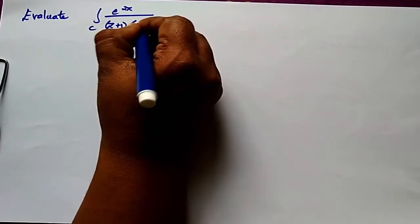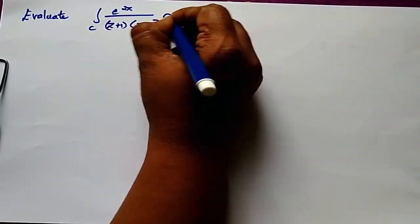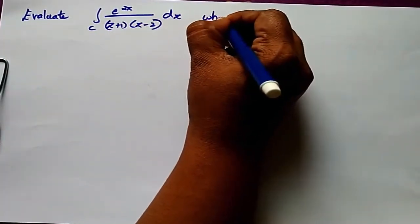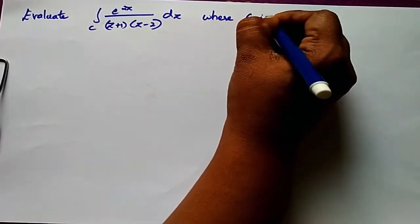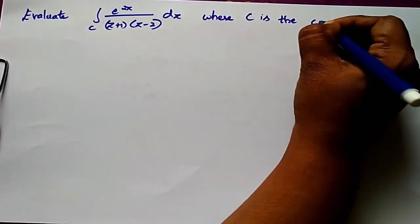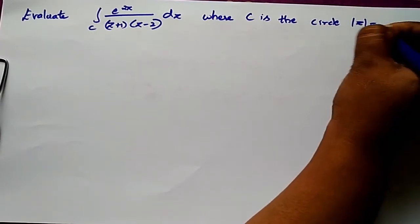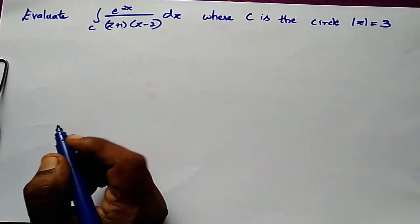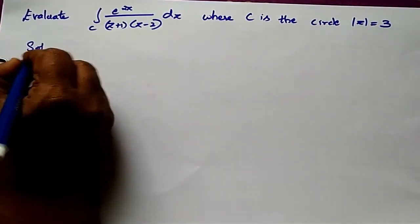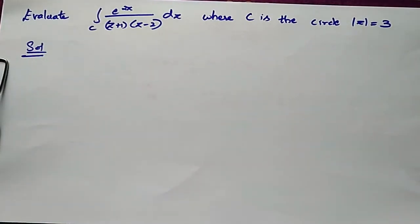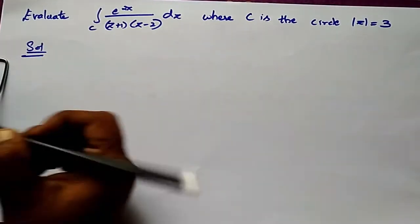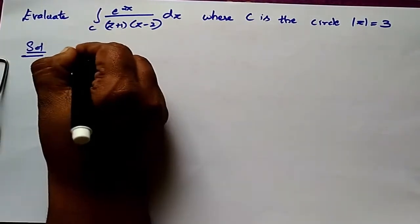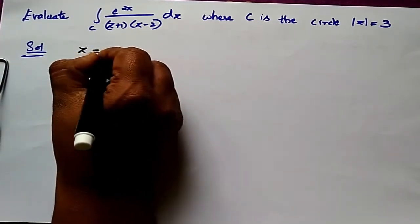Evaluate integral c of e^(2z) divided by (z+1)(z-2) dz, where c is the circle with |z| = 3.